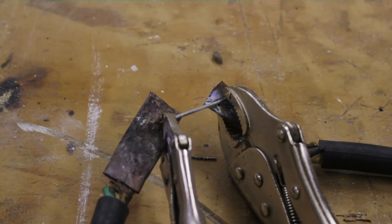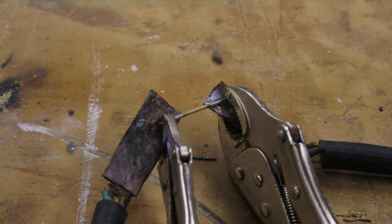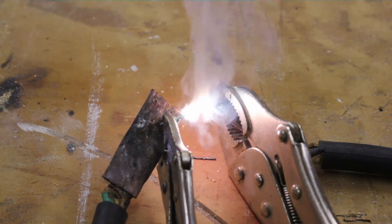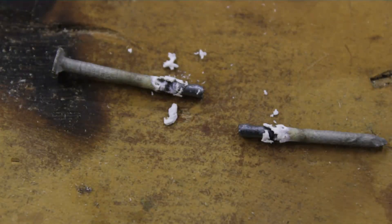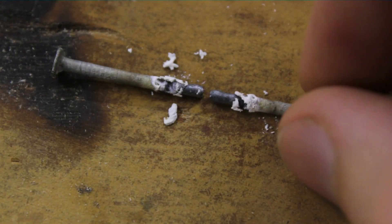Galvanized steel nails put on a light show. This is because of the zinc coating that's supposed to prevent rusting.